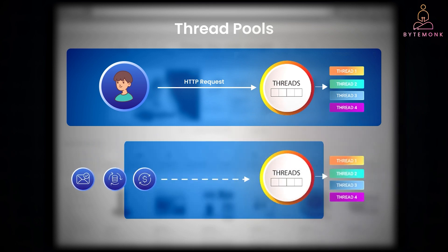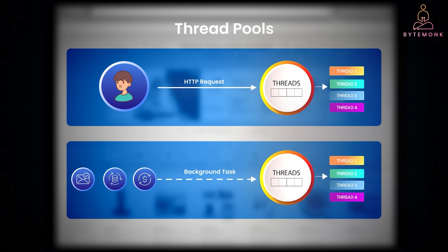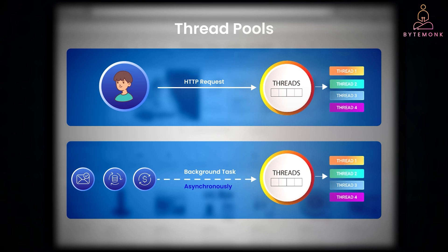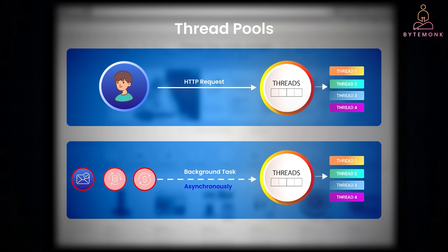You can also assign another thread pool for background jobs, such as email notification or data processing. This pool operates asynchronously and doesn't interfere with real-time user interactions. Even if these background tasks get delayed or encounter issues, it won't impact the user experience on the front-end.